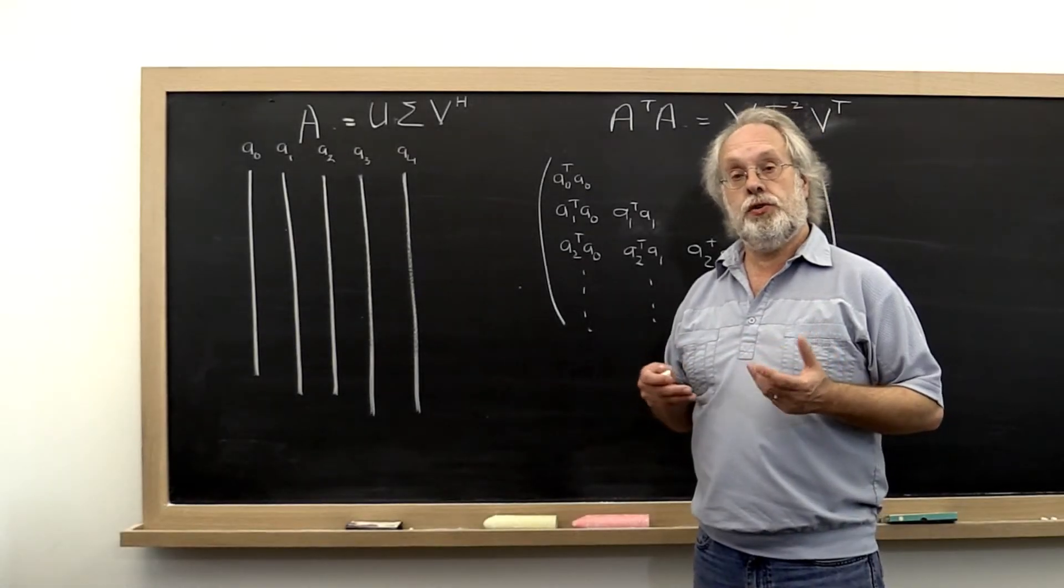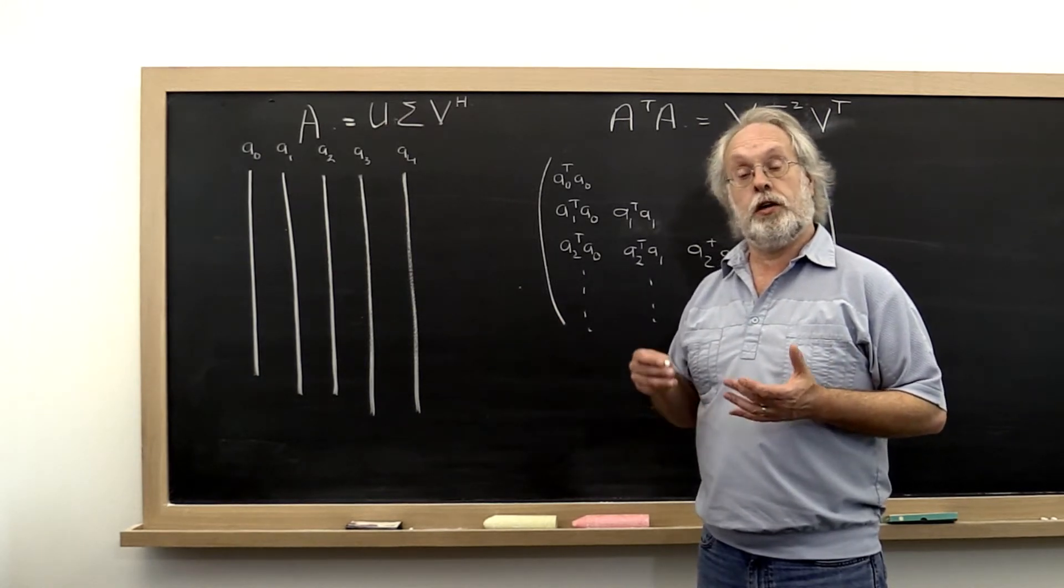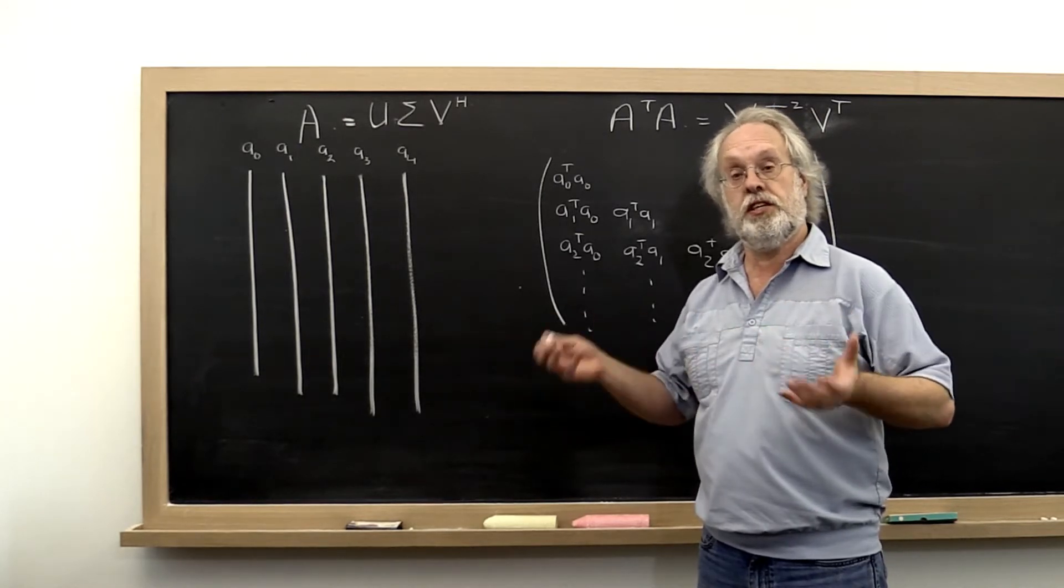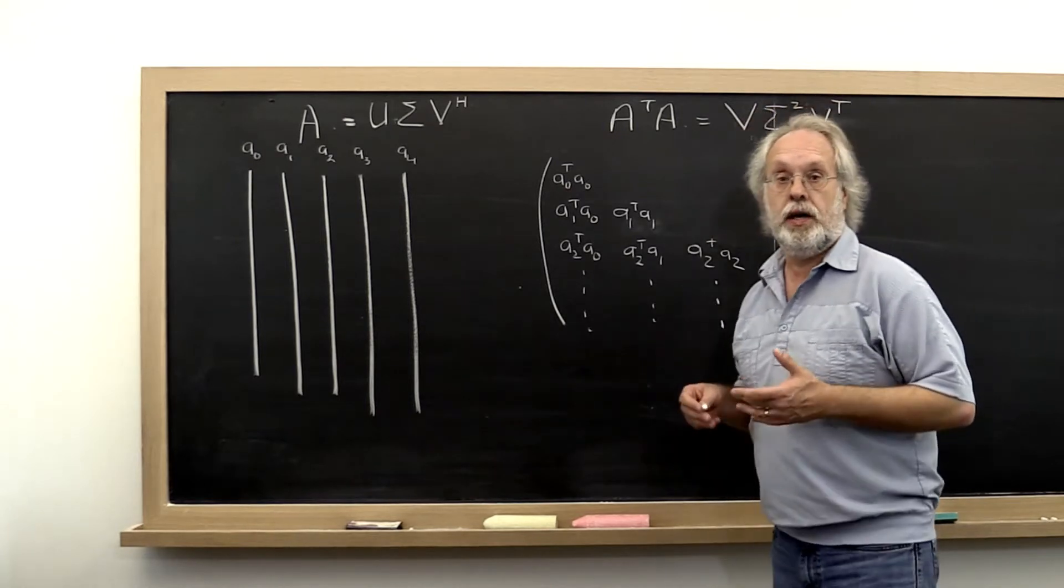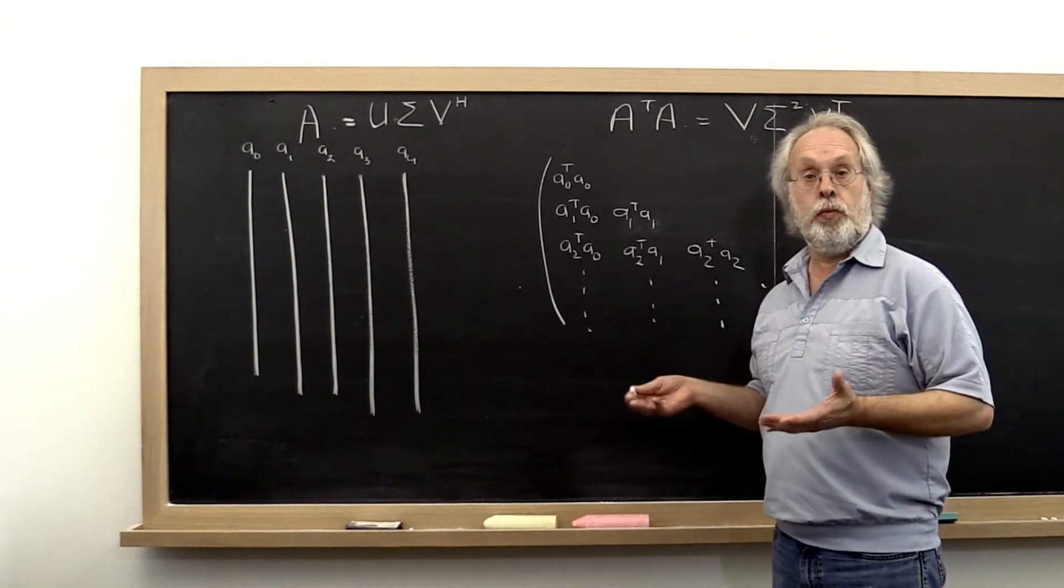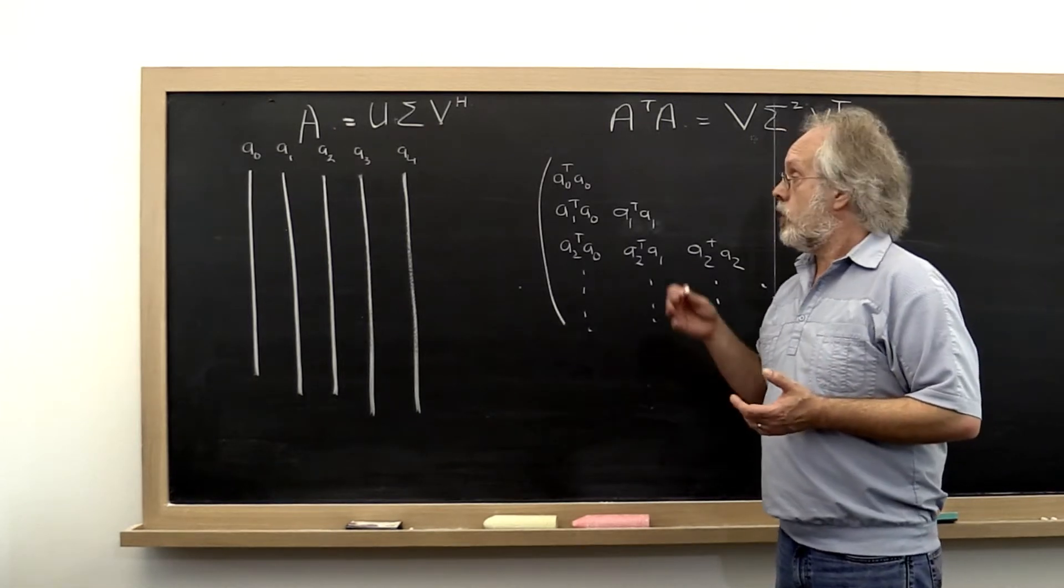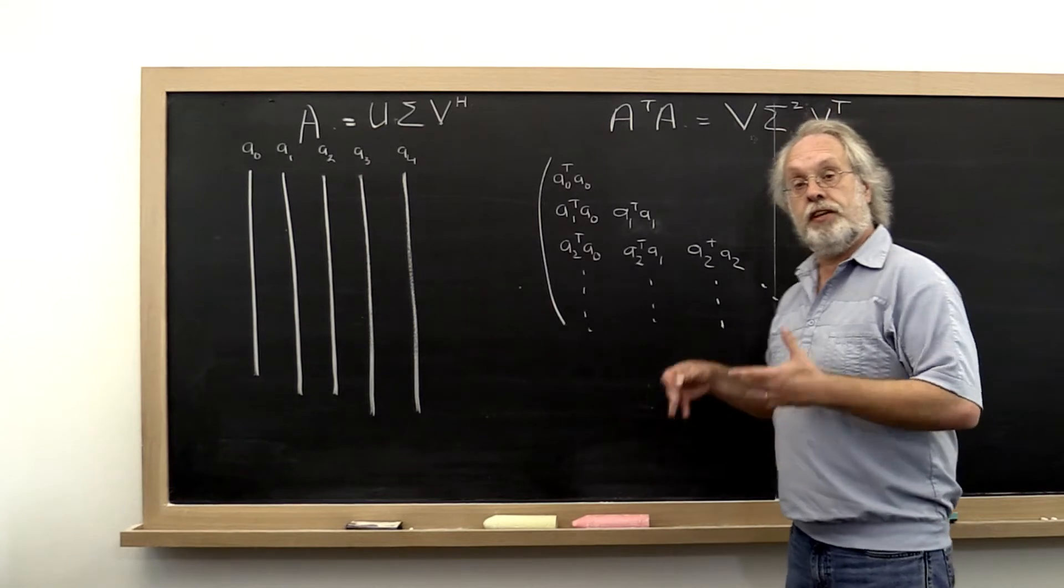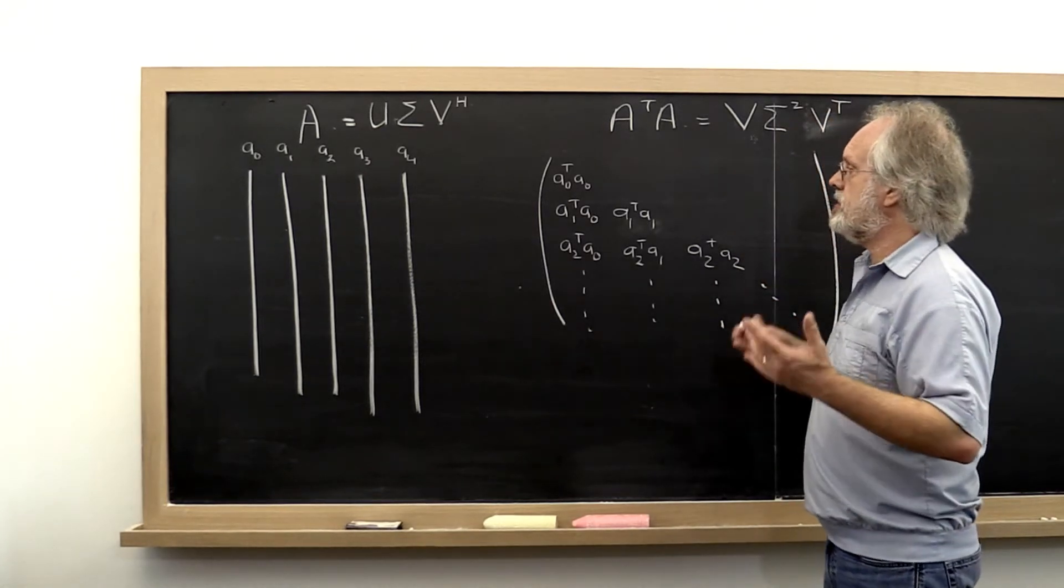Just like we managed to take the implicitly shifted QR algorithm for computing the spectral decomposition and transform it into one that computed the singular value decomposition, we can similarly take the Jacobi algorithm, the Jacobi method, for finding the spectral decomposition and morph it into one that computes the singular value decomposition. And how does that go?